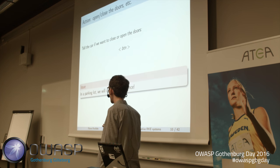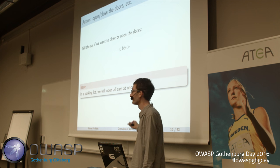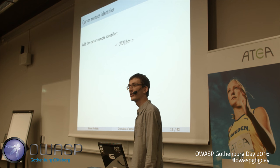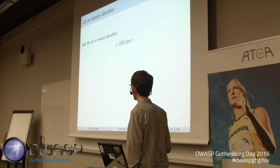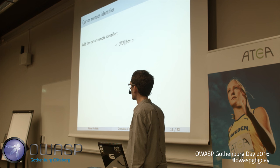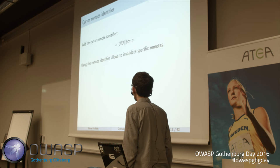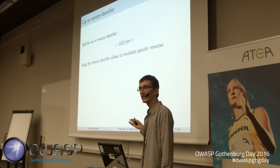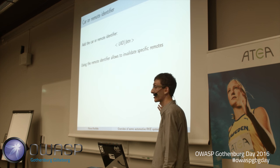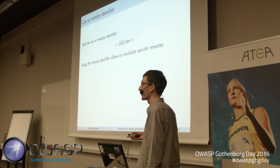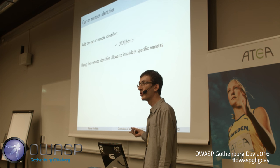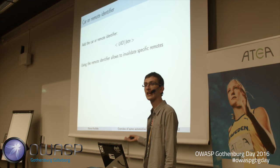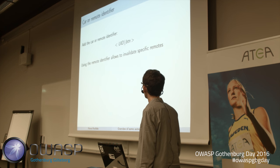To identify the target, we add a UID — which can identify either the car or the remote. Identifying the remote is better because later we can invalidate a specific remote if needed — for example, if the user loses it, we can tell the car to ignore that remote. It's a security feature for free.